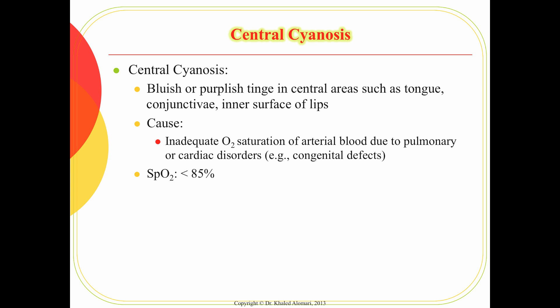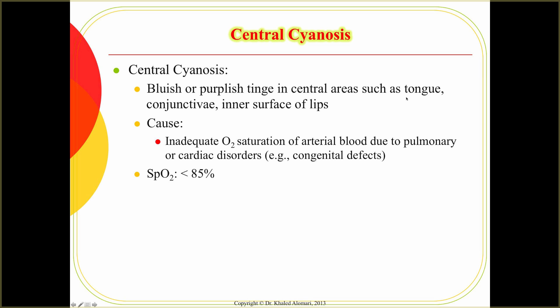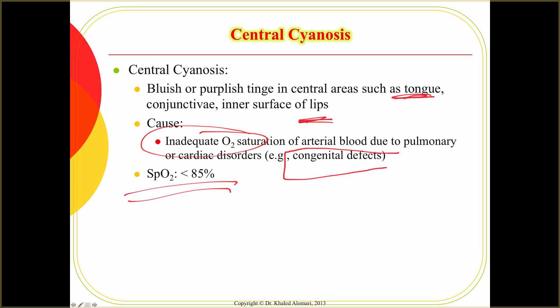The other finding is central cyanosis, which is a medical emergency. This is a cyanosis or bluish color that you mainly see in central areas like the tongue and lips. Whenever you see that, it's a medical emergency because it indicates severe hypoxia — the oxygen saturation is very low, usually below 80 to 85 percent.